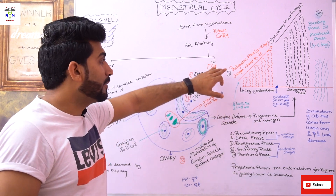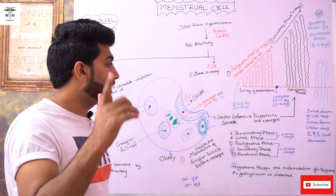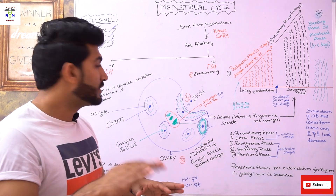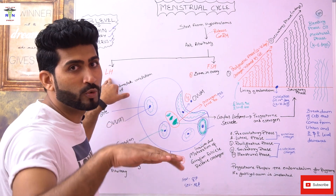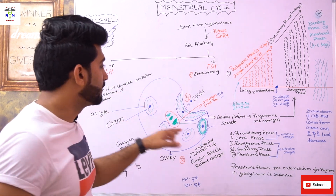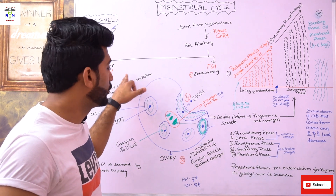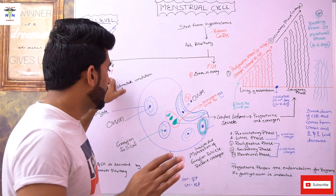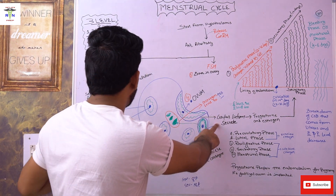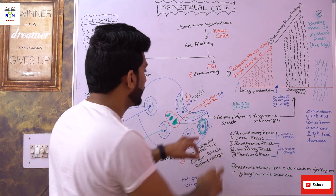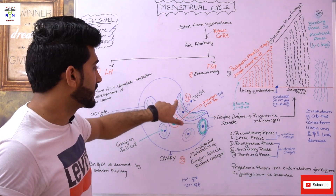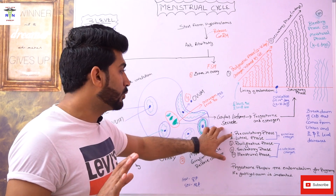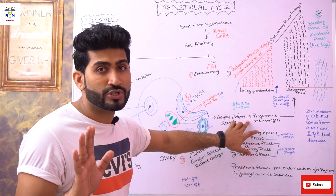Now the second phase is the secretory phase. The secretory phase begins in response to luteinizing hormone — when LH is secreted by the anterior pituitary, this phase is initiated. In this phase, LH has already caused ovulation and also causes secretion of LH and development of the corpus luteum. The corpus luteum becomes fully developed, as you can see here in a moon shape, and it secretes progesterone and estrogen.